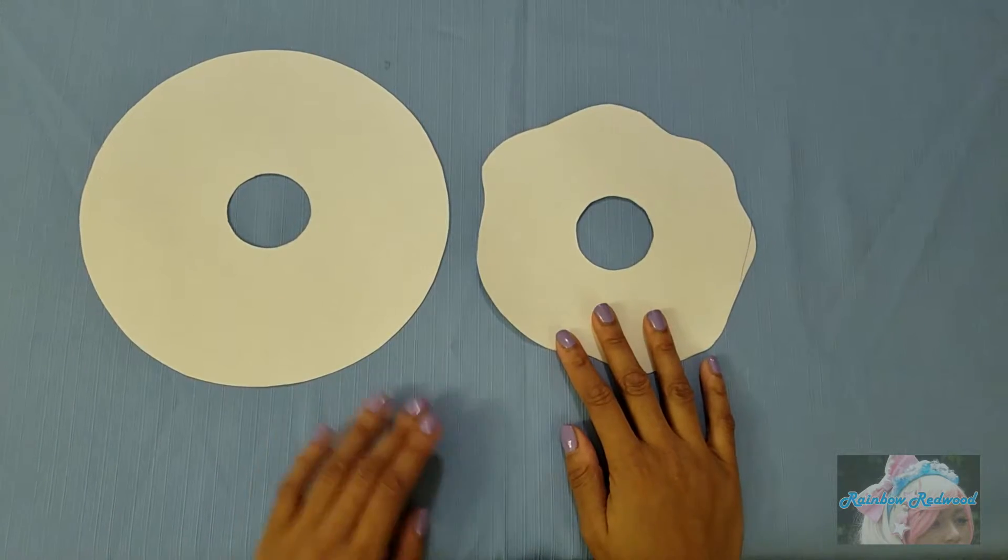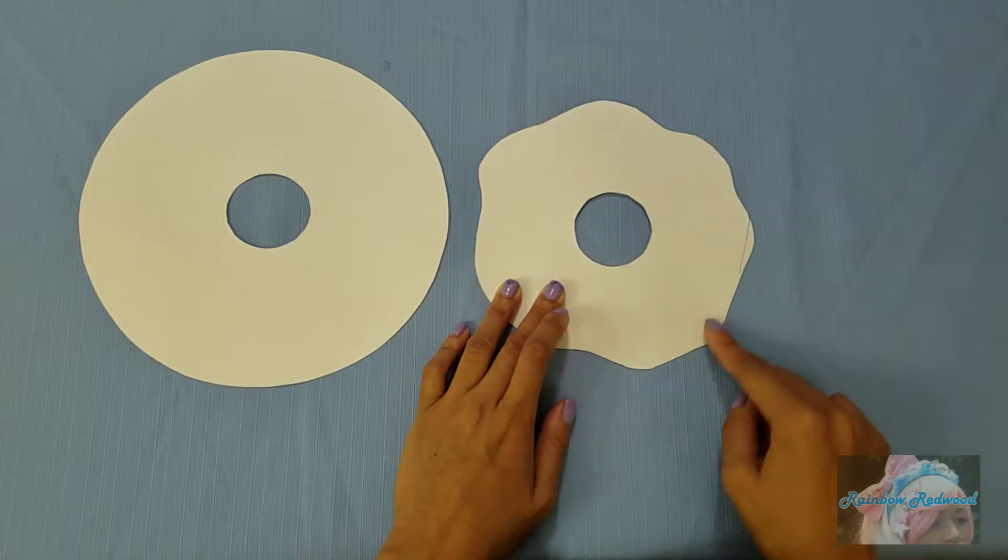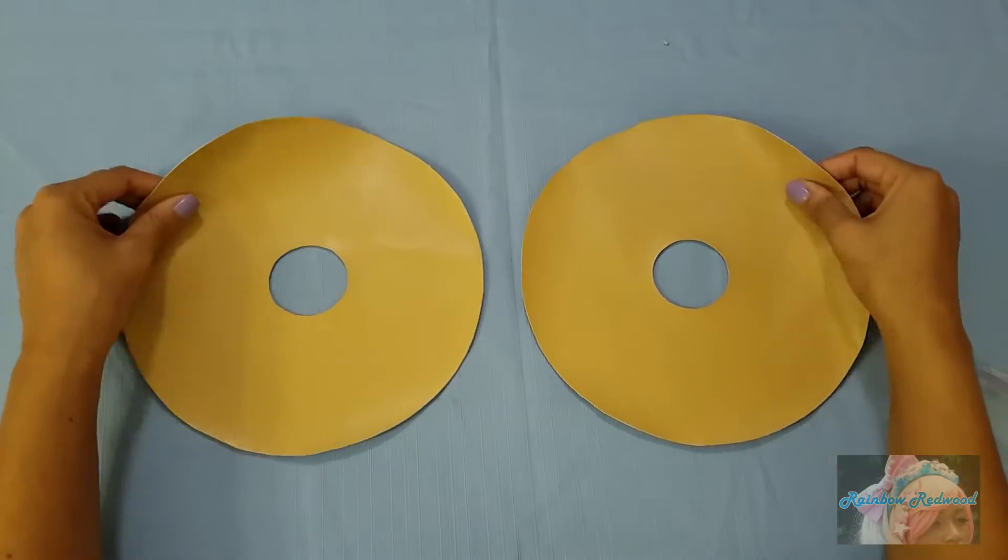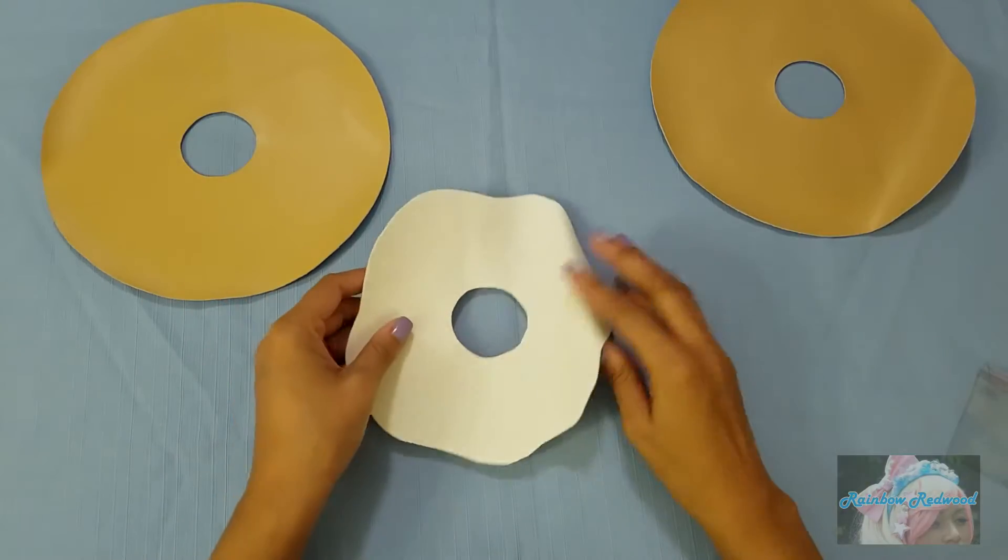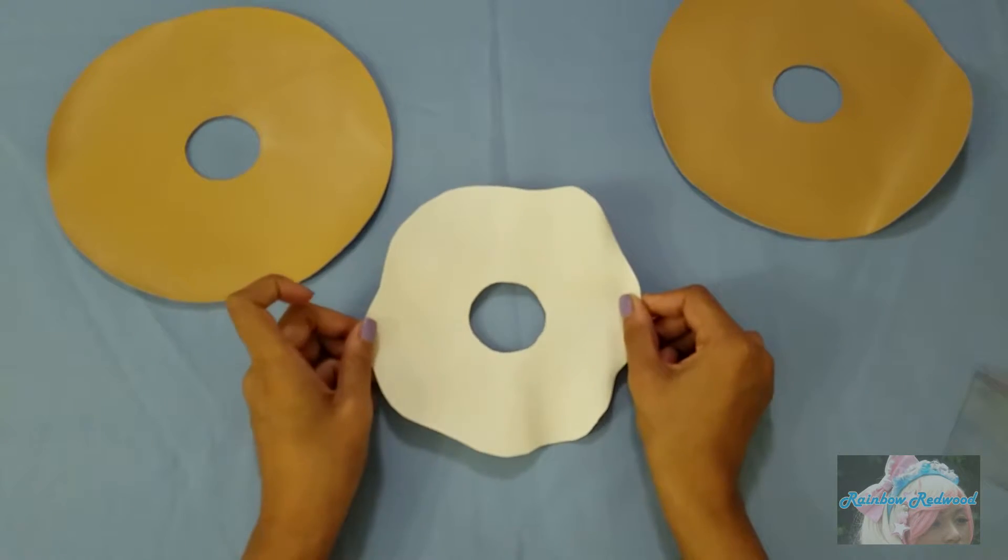For your frosting, you will create this same circle but then go back in and cut out a light wavy edge. With your light brown vinyl, you will cut out two of those circles and then with your white vinyl or whatever color you want your frosting to be, you'll cut out one frosting piece.